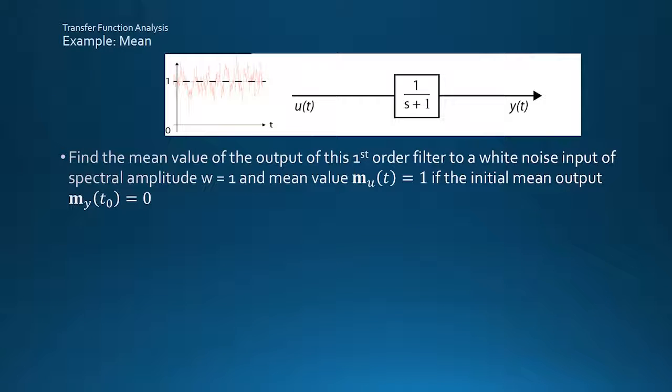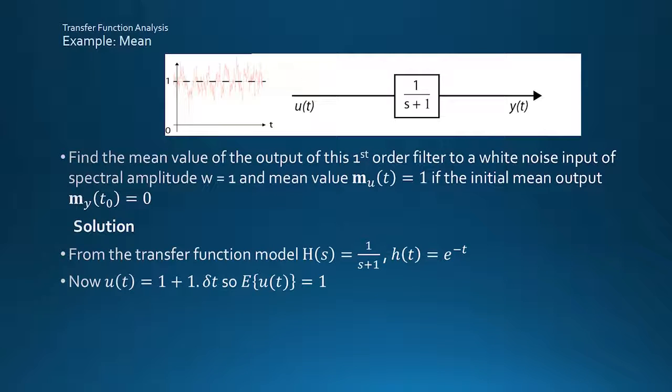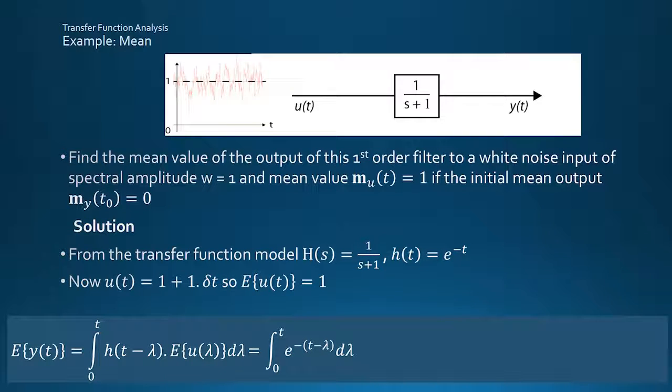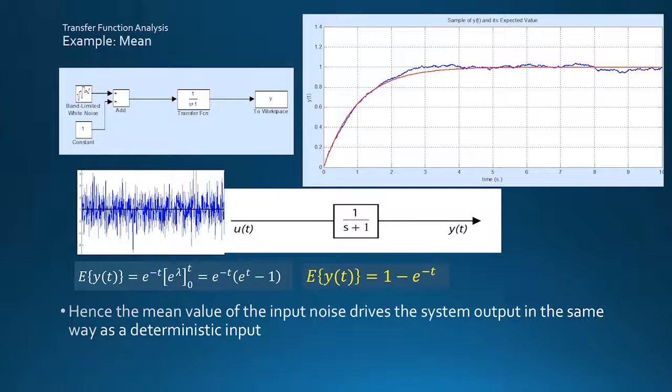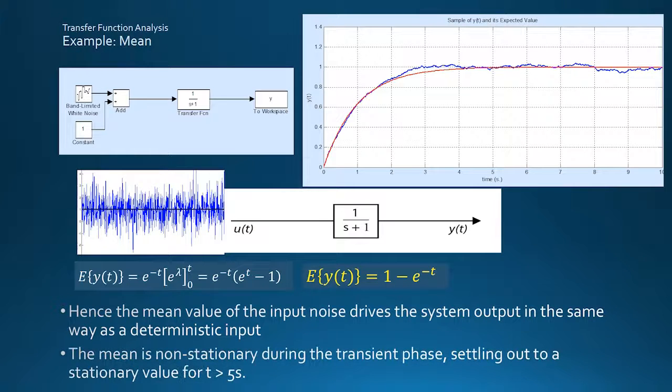Going back to the example used for the autocorrelation function, but this time assuming the input noise has an offset of one volt, and that the output is initially zero, we have the e to the minus t impulse response, and the expected value of the input is one. Applying the formula with the impulse response shifted to e to the minus (t minus lambda), and unity input signal strength gives this. Taking out the e to the minus t term from the integration, and integrating gives this result, which multiplies out as a charging exponential of unity time constant. Essentially, the input offset is acting like a deterministic signal driving the system dynamics. The actual mean result, however, only applies once the dynamic response has died away, beyond around five seconds or so here.